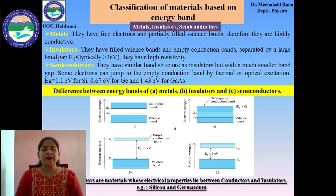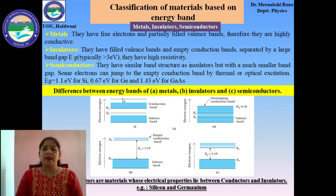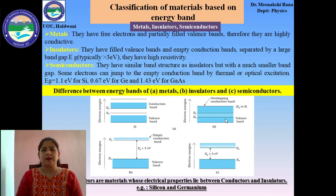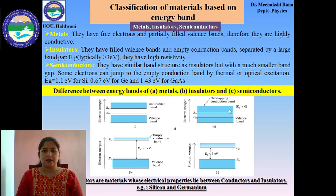We can classify materials based on energy gaps into basically three types: metals, insulators, and semiconductors. In case of metals, they have free electrons and have partially filled valence bands. The valence band and conduction band overlap, so they have very high conductivity, as shown in this figure.